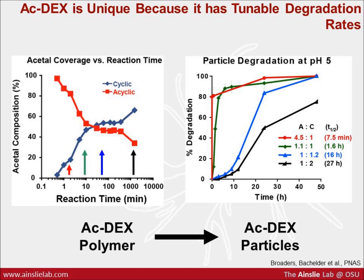What's unique about ac-dex is its degradation rates. When we form ac-dex, we have both cyclic and acyclic acetal coverage, and that varies with reaction time, as you can see in the left-hand graph. The red, green, blue, and black arrows correspond to different degradation profiles on the right-hand graph as indicated by the t-half. The red line has a degradation half-life of seven and a half minutes, whereas the black has a 27-hour half-life — at pH 5. At pH 7.4, it would be about two logs slower. So with ac-dex, we can get unique degradation profiles lasting minutes, hours, and even months by varying the cyclic and acyclic coverage as well as the polymer molecular weight. This is quite unique compared to PLGA, whose degradation rate is on the order of a month and is pretty fixed because of the ester degradation rate.